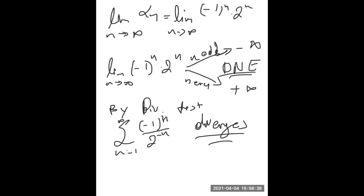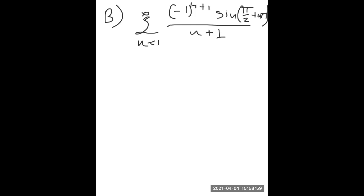Let's go to part b. For b, we examine the sum from 1 to infinity of (-1)^(n+1) times sin(π/2 + nπ/(n+1)). Why can't we use the alternating series test? This seems like something that will probably decrease. To use the alternating series test, we must first make sure that we actually have an alternating series, since sine and cosine can take -1 and 1 infinitely many times and might cancel the (-1)^(n+1).